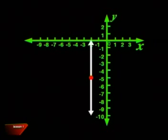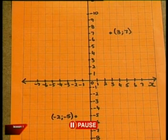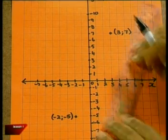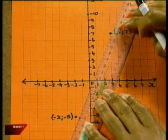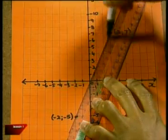Now the next thing to consider is, if you have two points, how many different straight lines can be drawn through them? I can only imagine one straight line ever joining two points. Right again. There's only one way of joining two points if you're considering straight lines only.